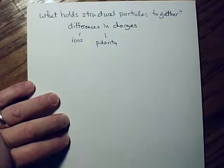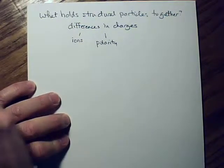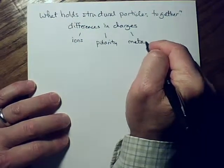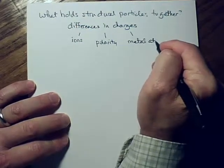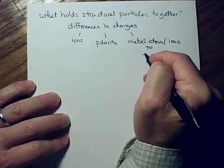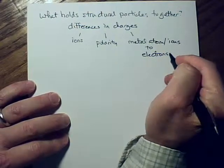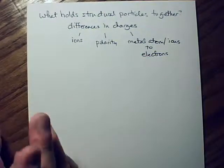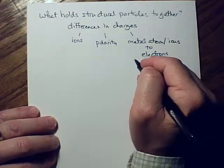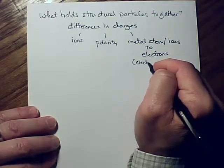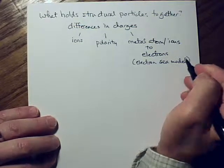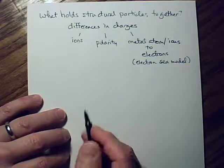It might be some kind of polarity in a molecule, or in the case of metals, it's metal atoms or ions attracted to electrons. Metals are a bit different from what we've been discussing. This is called the electron sea model, and I'll explain it briefly.